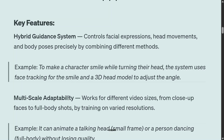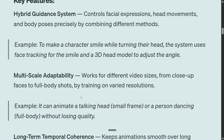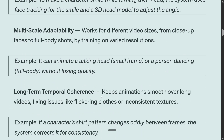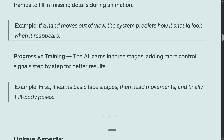Multi-scale adaptability: can work for different sizes of video — not just landscape but even portrait videos can be generated. A plethora of AI videos are coming on YouTube and TikTok, I assume. Long-term temporal coherence: keeps animation smooth over long videos. And complementary appearance guidance: uses AI-generated reference frames to fill in missing details. Apart from that, progressive training is used for multi-modal training, where AI learns in three stages — first on audio, then a combination of audio and video, then a combination of audio, video, and text.